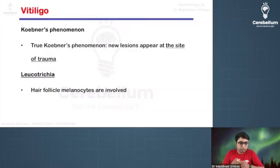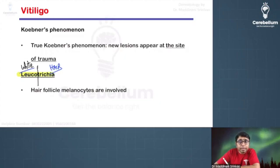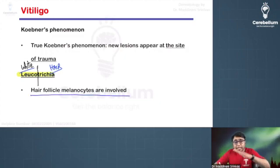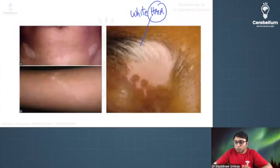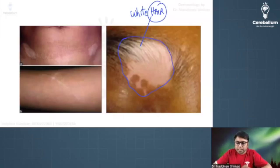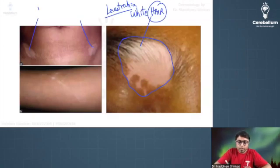In vitiligo, we can also see the Koebner's phenomenon. There is also the term leukotrichia — leuko meaning white, trichia meaning hair. Not only skin but hair can also become white in these patients; if hair follicle melanocytes are damaged, the hair turns white. In this eyebrow image, both the skin and the hair are white — this is leukotrichia.